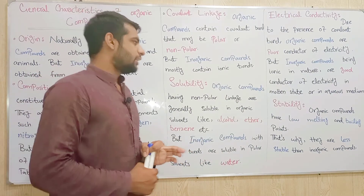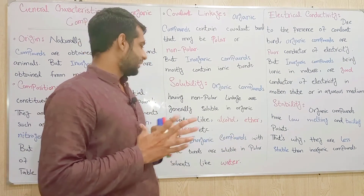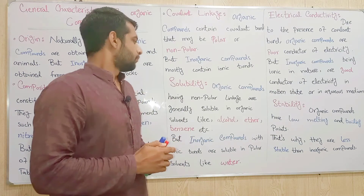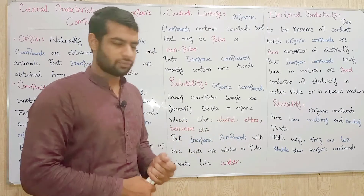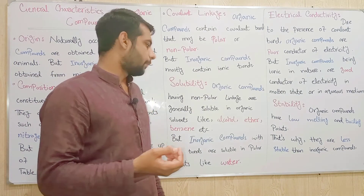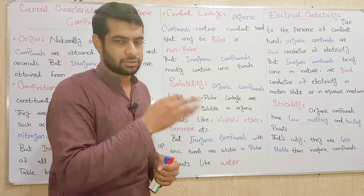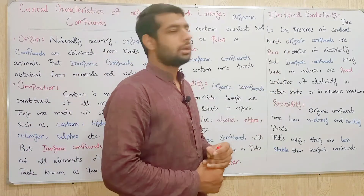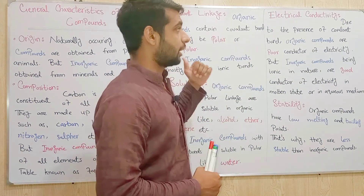جو ہمارے پاس solubility ہے، اس میں ہم نے پہلے پڑھ چکے ہیں — like dissolves like، یعنی polar، polar میں حل ہوتے ہیں اور non-polar، non-polar میں۔ اسی طریقے سے organic compounds non-polar ہوتے ہیں، اس لیے یہ non-polar organic solvents جیسے alcohol، ether، benzene میں dissolve ہوتے ہیں۔ جبکہ inorganic compounds polar ہوتے ہیں اس لیے یہ water جیسے polar solvents میں حل ہوتے ہیں۔